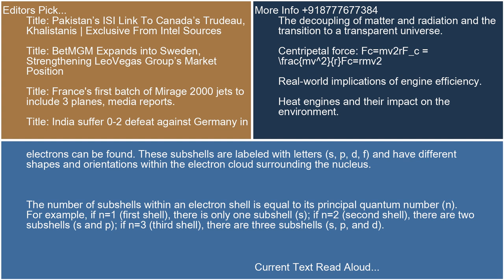The number of subshells within an electron shell is equal to its principal quantum number, N. For example, if N equals 1 (first shell), there is only one subshell: S.